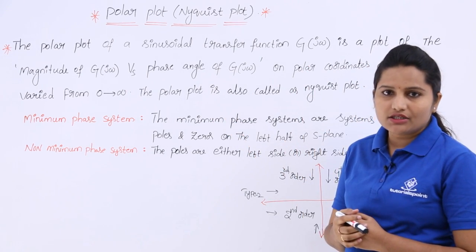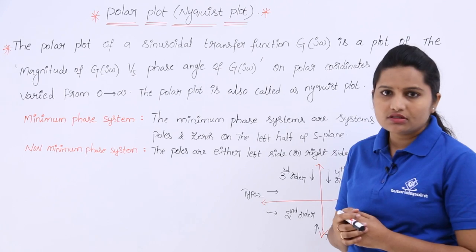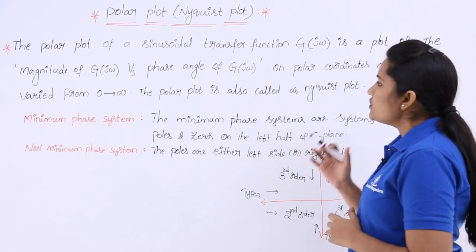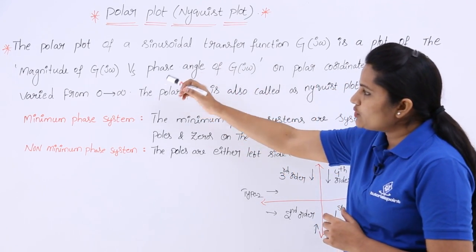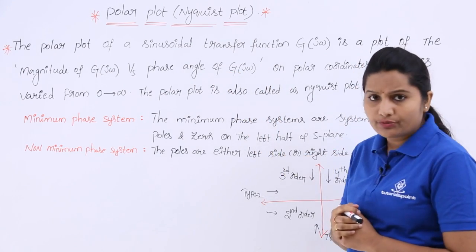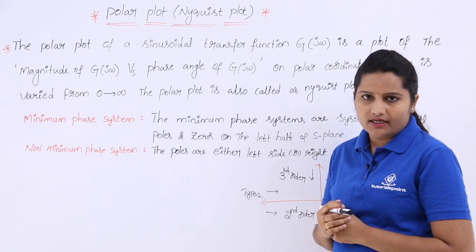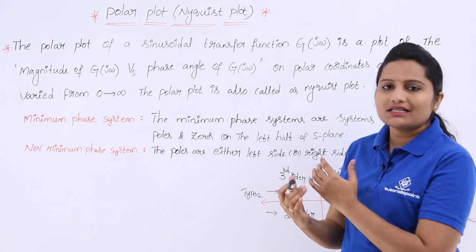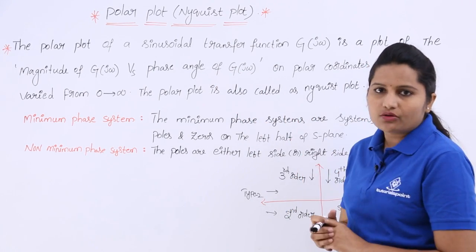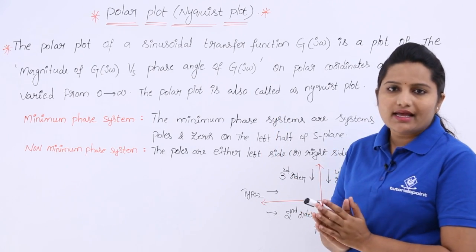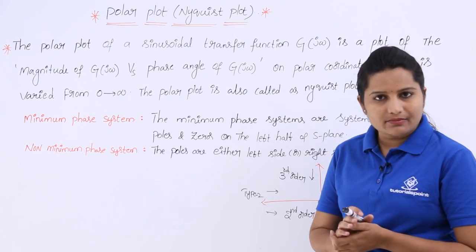You know how to calculate magnitude and phase angle for G(jω) — we already calculated these for many transfer functions. After considering magnitude and phase, we plot the magnitude and phase angle of G(jω) on polar coordinates as omega is varied from 0 to infinity. Whatever diagram you get from this is called a polar plot or Nyquist plot, and it is used for stability analysis.